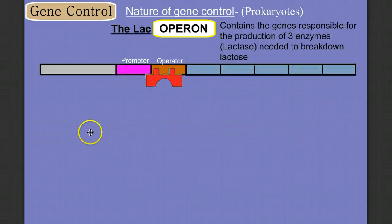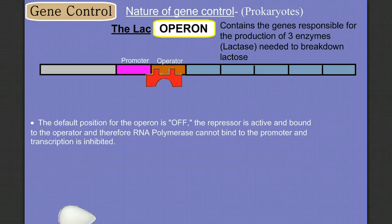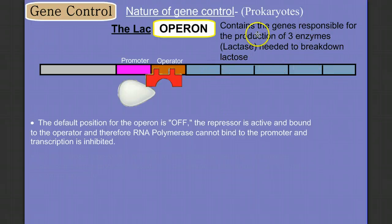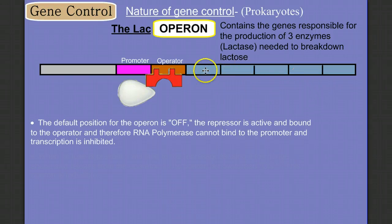Now let's look at a tougher example: the lac operon. In the lac operon, our default position is off. The repressor is active and bound to the operator, so RNA polymerase can't bind to the promoter and transcription is inhibited. The lac operon contains a series of genes responsible for production of three enzymes that together we call lactase — the enzyme needed to break down lactose, the sugar found in milk and dairy products. So by default, the bacteria is not making lactase.